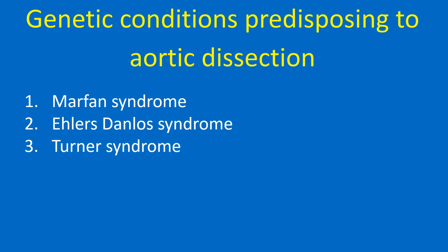Genetic conditions predisposing to aortic dissection include Marfan syndrome, Ehlers-Danlos syndrome, and Turner syndrome.